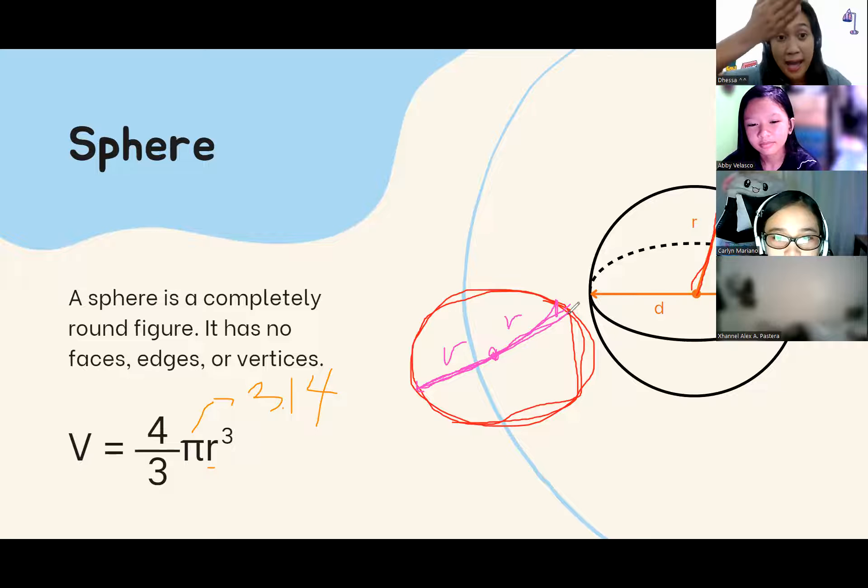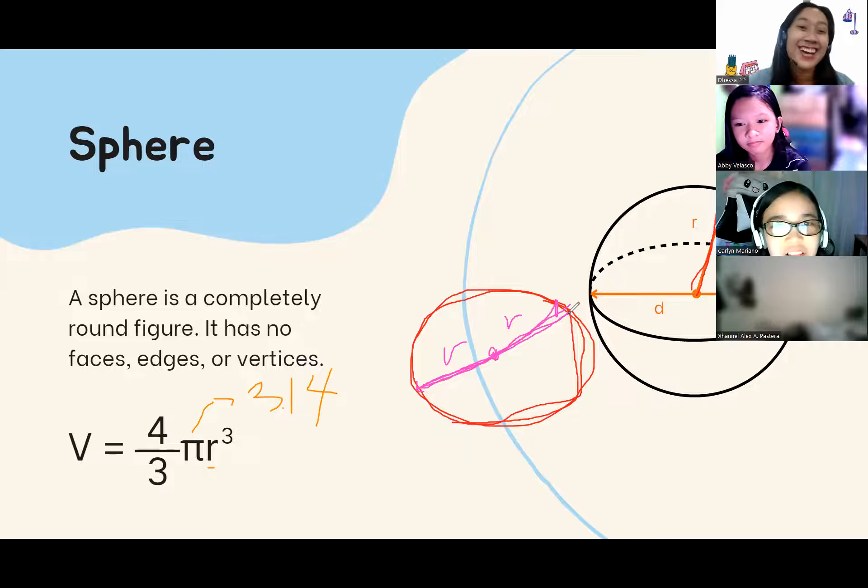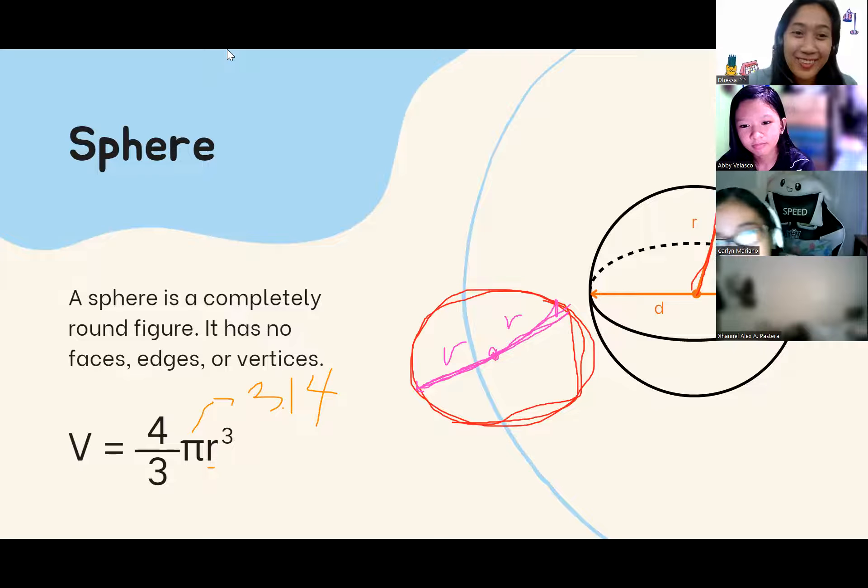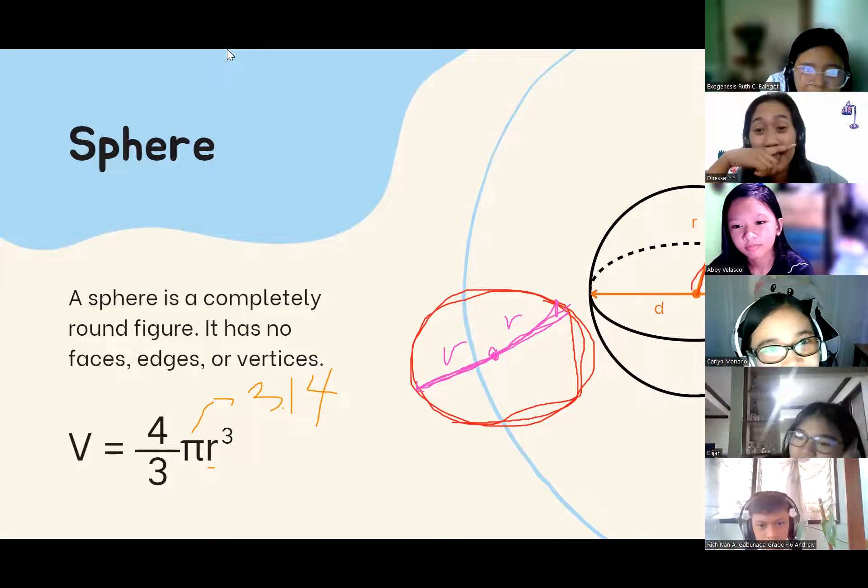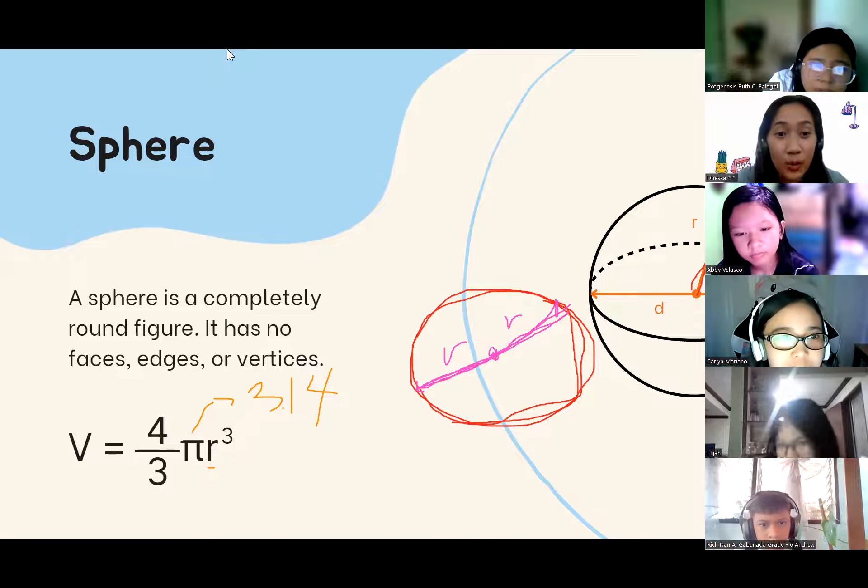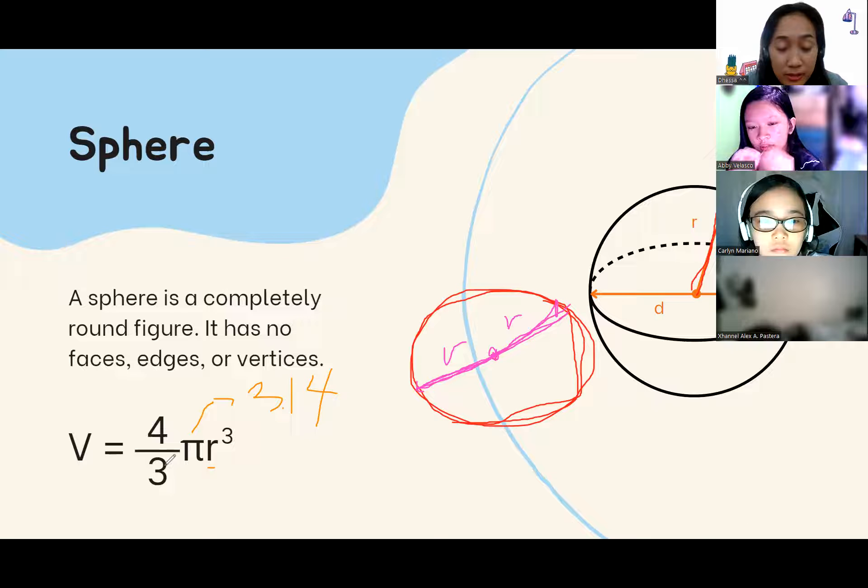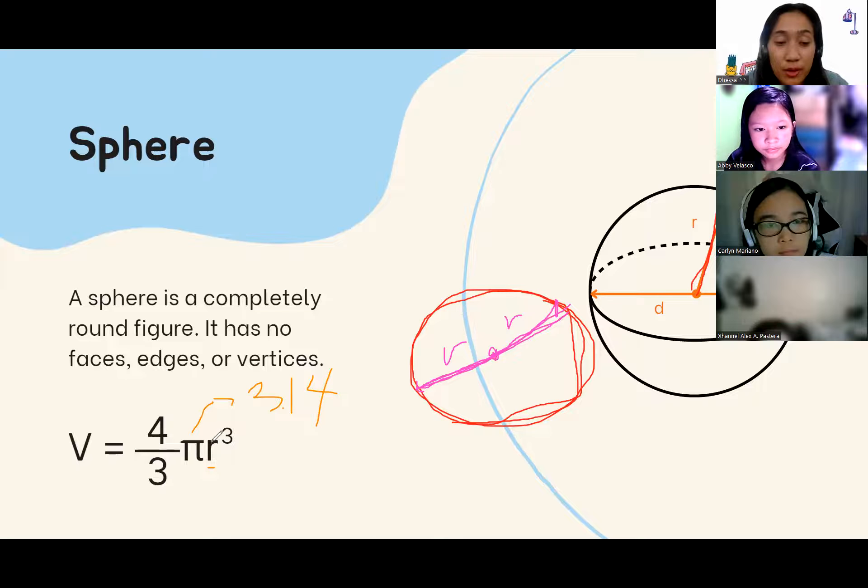Again, what's the radius? The half of your diameter. Okay? Okay? Okay? Okay. Again, this is your formula for you to have your volume. 4 over 3, 4 over 3 or 4 thirds times the pi. 3.14 and radius raised to the power of 3. Okay? Let's try.